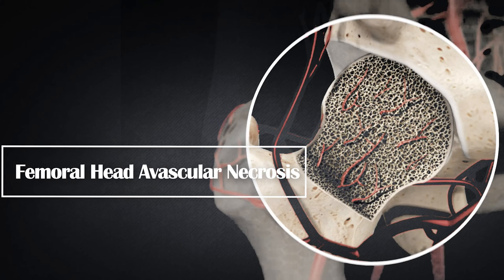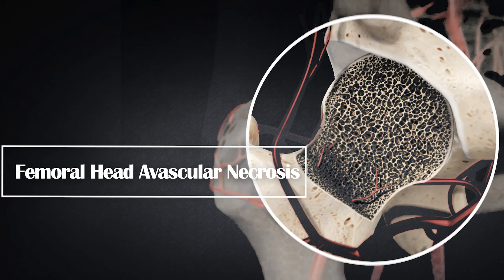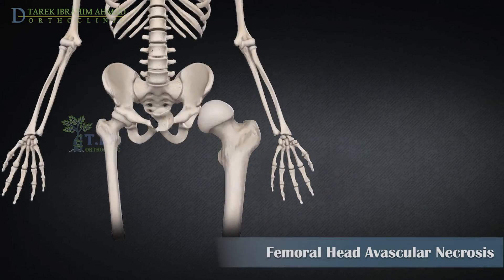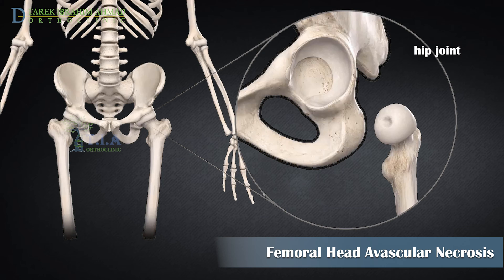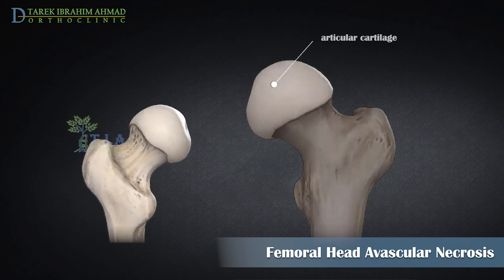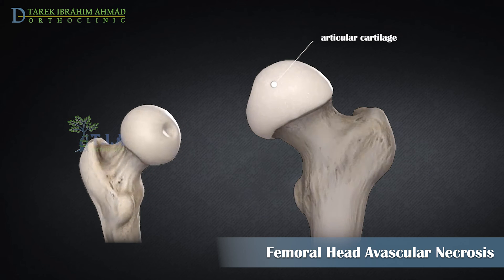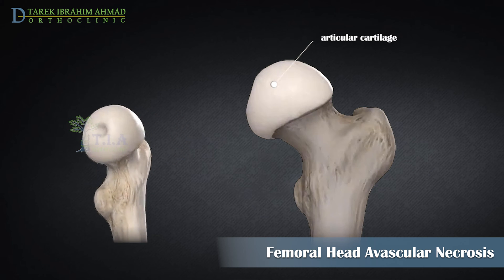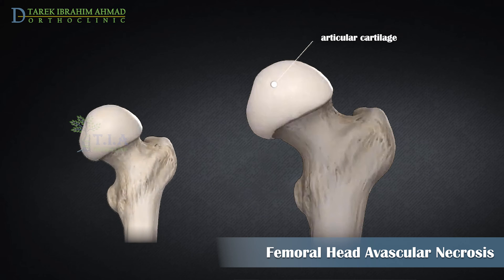Avascular necrosis of the femoral head — AVN. The hip is a ball and socket joint. The socket is formed by the acetabulum, which is part of the large pelvis bone. The ball is the femoral head. The surface of the ball and socket is covered with articular cartilage, a smooth slippery substance that protects the bones.